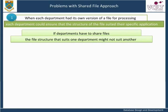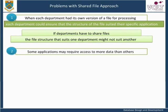For example, data might need to be sorted in a different sequence for different applications. For instance, customer details could be stored in alphabetical order or in the ascending order of customer number. Some applications may require access to more data than others. For instance, a credit control application will need access to customer credit limit information, whereas a delivery note printing application will only need access to customer name and address details. The file will still need to contain the additional information to support the application that requires it.